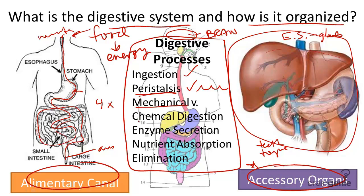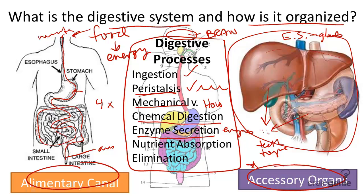Mechanical and chemical digestion is yet another process of the digestive tract. The key here is that there are two major ways how food is broken down — more on that in other videos. Secretion, or enzyme secretion, is another important process. It involves the release of enzymes into the digestive tract from these organs to help with breaking down food into smaller pieces.